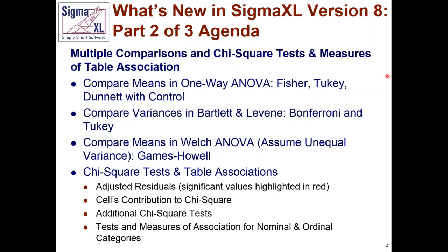So this is our agenda. We'll start with the one-way ANOVA, and the new post hoc tests include Fisher, Tukey, and Dunnett. Then we will look at comparing variances and the post hoc tests for variances, both in Bartlett and Levine. Then we will look at comparing means in Welch ANOVA when you cannot assume equal variance, and the comparison test is called Games-Howell. We will also be looking at chi-square tests and table associations.